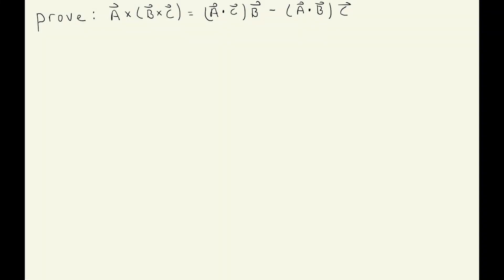Let me prove the vector triple product: a cross (b cross c) equals (a dot c) times the vector b, minus (a dot b) times the vector c. This is a vector identity, and to prove it we need to prove it for all three components, or prove it for an arbitrary component with index i.